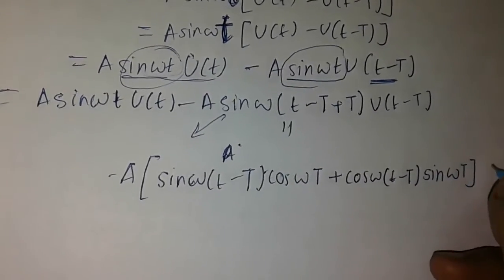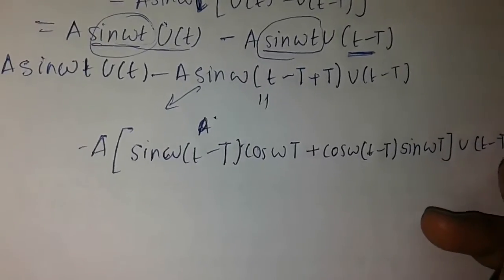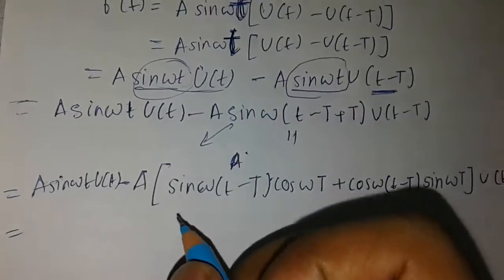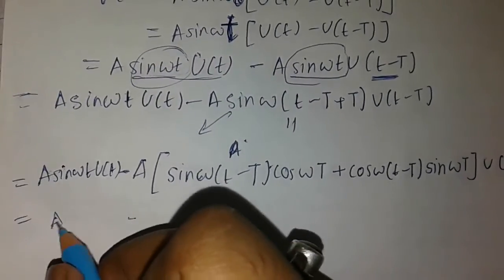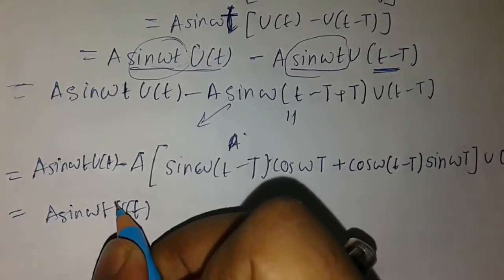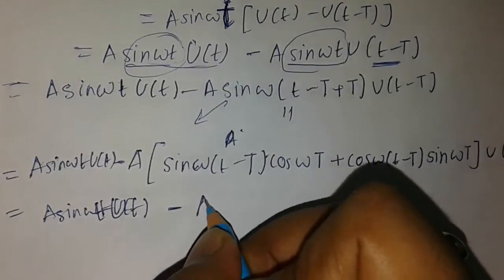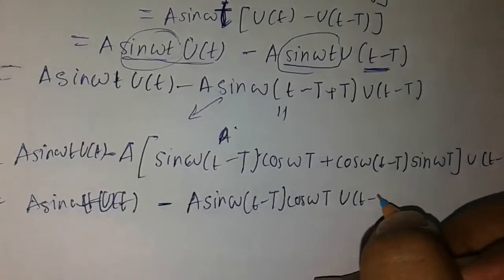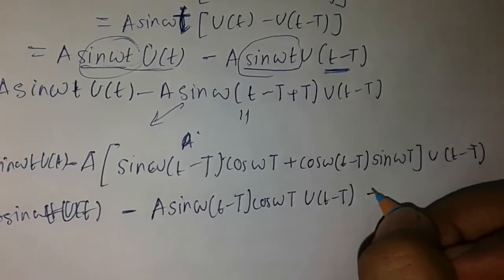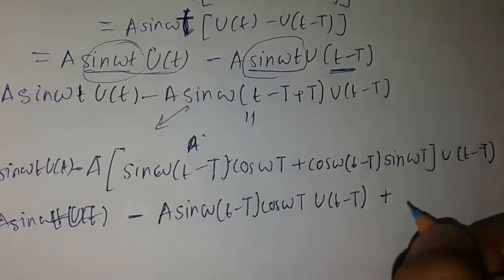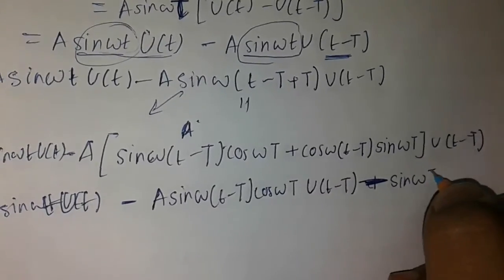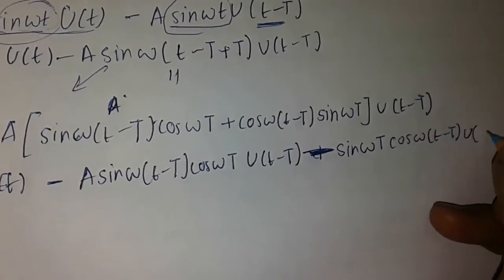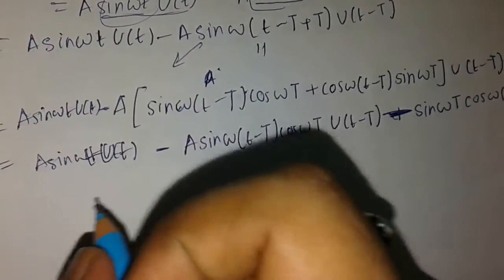Multiplying through by a and the gate function u(t − T), we write: a·sin(ωt)·u(t) minus a·[sin(ω(t−T))·cos(ωT) + cos(ω(t−T))·sin(ωT)]·u(t − T). The negative sign means the second grouped term becomes negative, giving minus a·cos(ωT)·sin(ω(t−T))·u(t−T) minus a·sin(ωT)·cos(ω(t−T))·u(t−T).